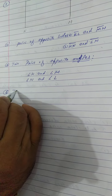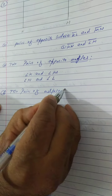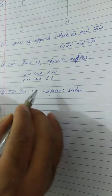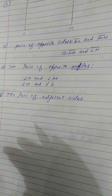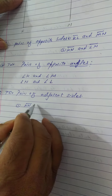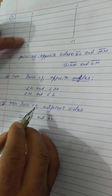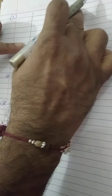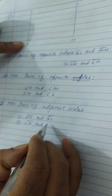Two pairs of adjacent sides. Adjacent sides means sides which are already connected — their vertex is common. Now see here: the pairs are line segment KN and line segment KL, and second, line segment LM and line segment ML. So these are the two pairs of adjacent sides.